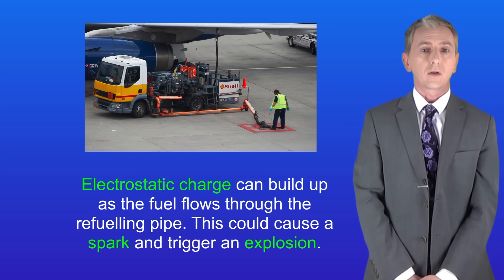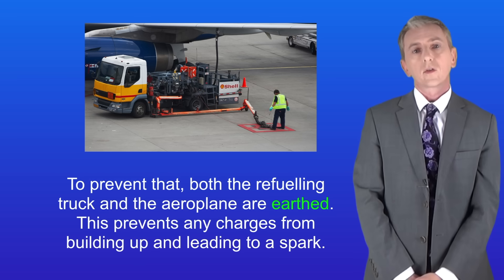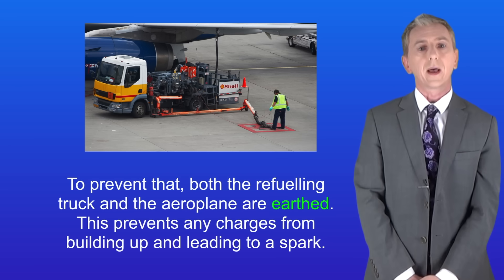This could cause a spark and trigger an explosion. So to prevent that, both the refuelling truck and the aeroplane are earthed. This prevents any charges from building up and leading to a spark.